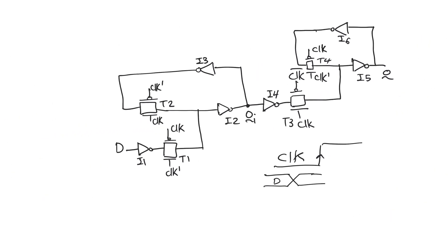How does this affect the register and lead to the formation of hold time? Transmission gates T1 and T3 are exactly the two transmission gates we were just discussing — two transmission gates in a forward path which should never be on together because one has the opposite control of the other. However, because there is a period of 1-1 overlap, there will be a path from D to Q which will create problems. When clock goes to 1 on the active edge, clock bar takes some time to go down to 0.